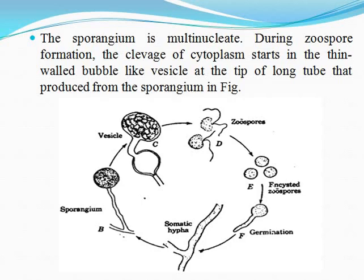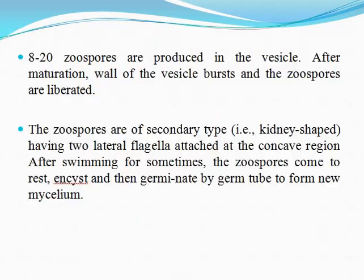Looking at the diagram, the sporangium develops at the top. The sporangium, when viewed, can be seen as a vesicle. The vesicle is a multi-nucleate sporangium. When the sporangium matures, it forms a vesicle.